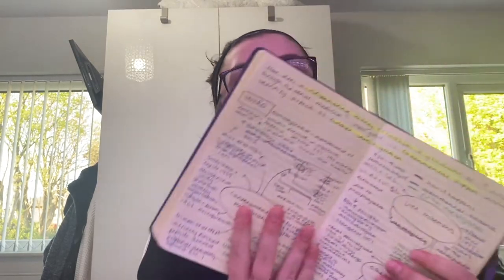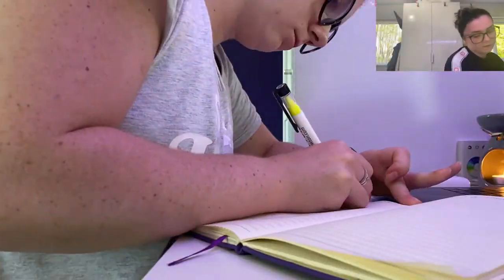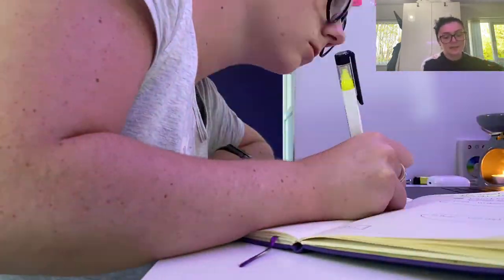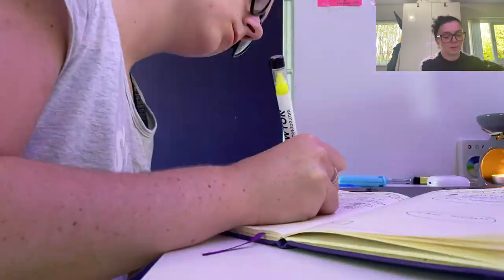The first thing I did when writing out my plan was highlight the question and the important things it was asking me. I highlighted 'concentrating kidney establishing a gradient' — I needed to explain how that happened. Then I needed to write about the experimental support and identify aspects of further investigation. So it's asking me to do three things, and I used three different colours to make sure that in each of my points I had spoken through those three things. I wrote 'intro' at the top, 'conclusion' at the bottom, and then identified my three big points.